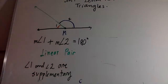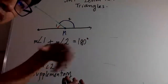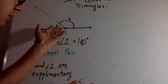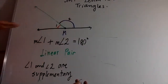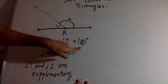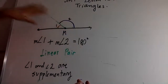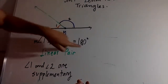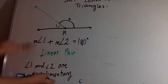Angles one and two are supplementary. The really important thing is that in more complex drawings, you need to recognize every time you have a straight line — 180 degrees — and if that line has been cut by any ray, the two generated angles sum to 180. That is what we call a linear pair.